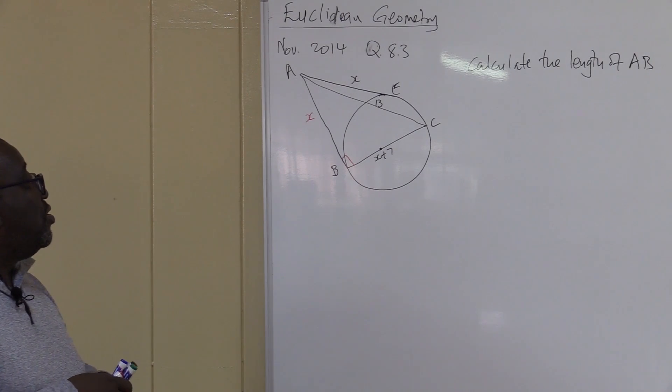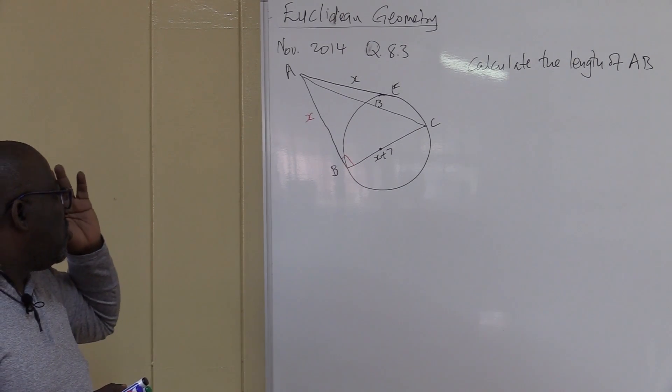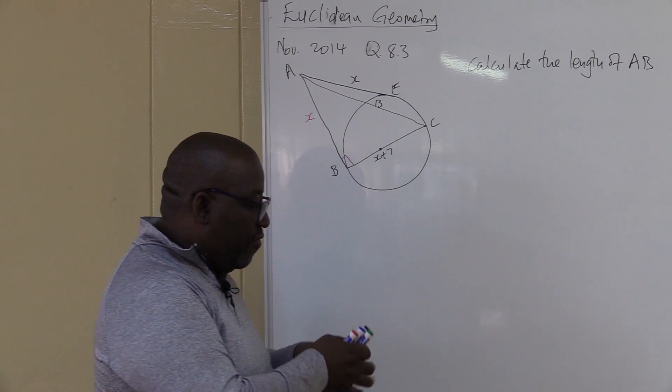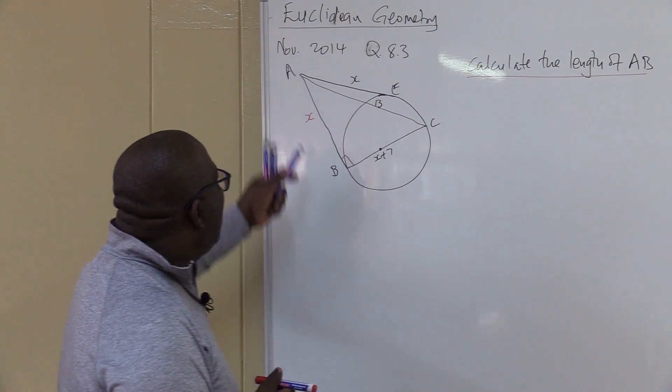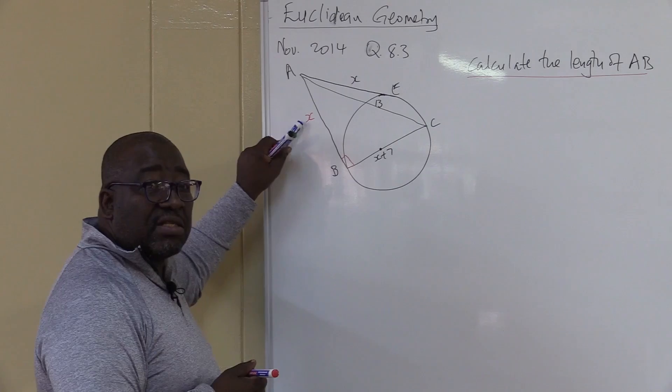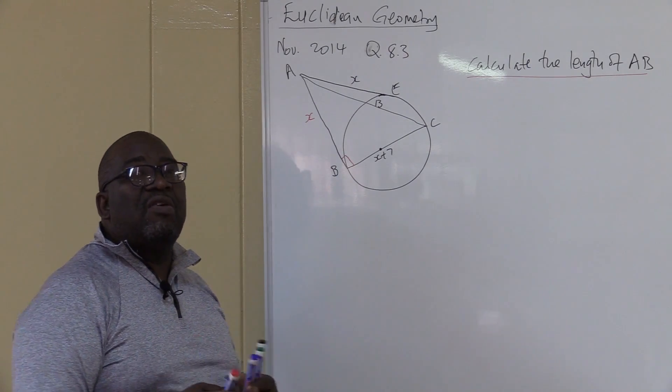That is all that we know. So what is it that we are being asked to find here. Calculate the length of AB. We are just looking for the length of AB. Remember this is AB. Which is the same as X. In other words, we are just looking for X.